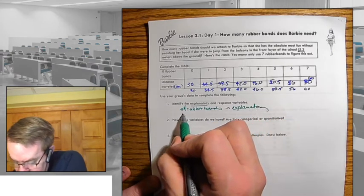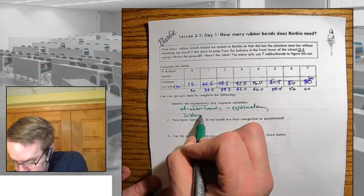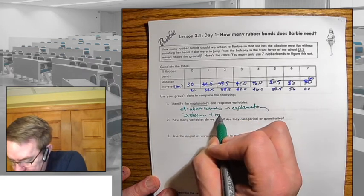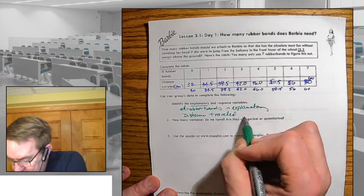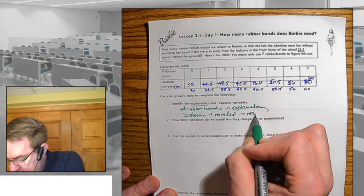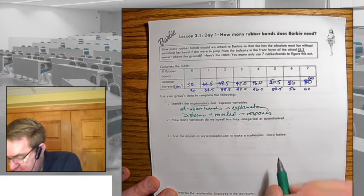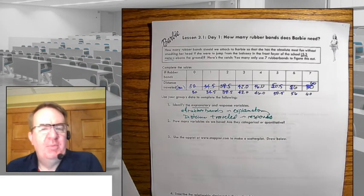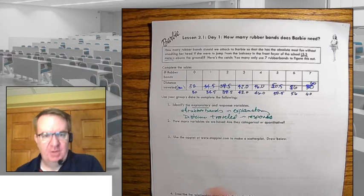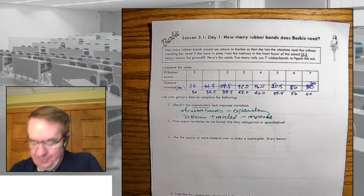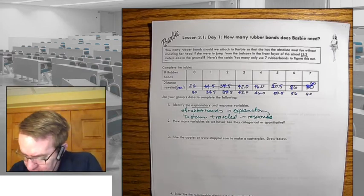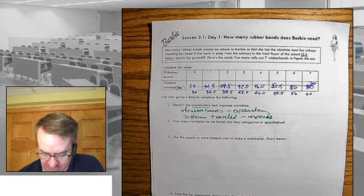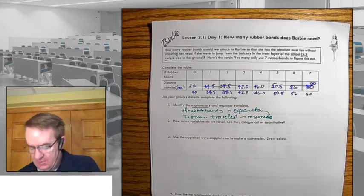And then the distance traveled is going to be our response. And if you think about it, the more rubber bands we put on, different response. The more rubber bands we link up to Barbie, the further she should be able to fall. So there's the explanatory and response. We're going to get a little bit more specific to those a little bit later.